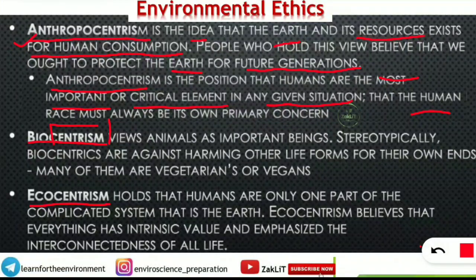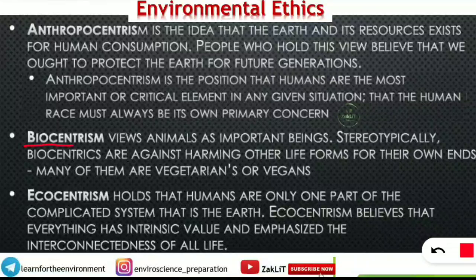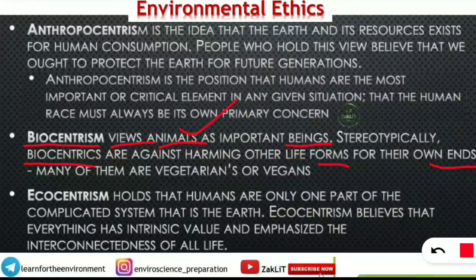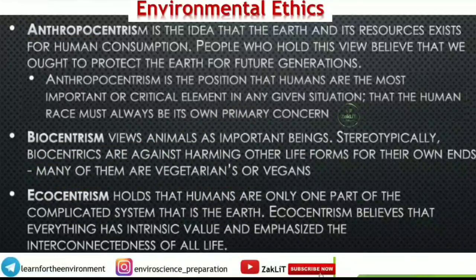Coming to the next thing, that is biocentrism. Bio means living organism — bios means life. Biocentrism views animals as important beings. Here they are not considering humans as the most important; they are considering animals as important beings. Stereotypically, biocentrics are against harming other life forms for their own ends. Most biocentric people are vegetarian because they don't want to kill or harm any other life form. For anthropocentrism the most important are humans, while for biocentrism the most important are animals — that is the basic difference between the two, and both can be said to be opposites.